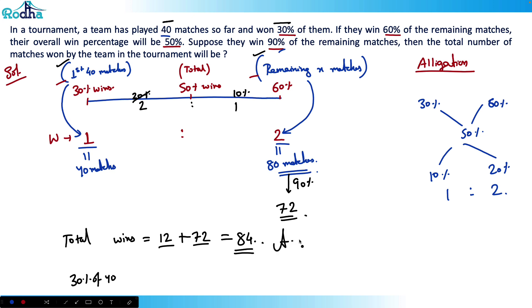So 84 is the answer for this question. That's the fun of alligation, right? You apply alligation, you don't need to take any variables, you don't need to make any equations. And it's a very easy process.